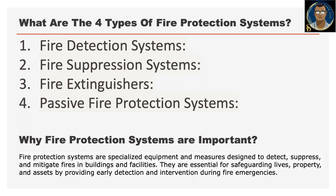Let us move to the types of fire protection systems available. One is fire detection system, another is fire suppression system, fire extinguishers, and passive fire protection system. Fire protection systems are important because they use specialized equipment and measures designed to detect, suppress and mitigate fires in buildings and facilities. They are essential for safeguarding lives, property and assets by providing early detection and intervention during fire emergencies.